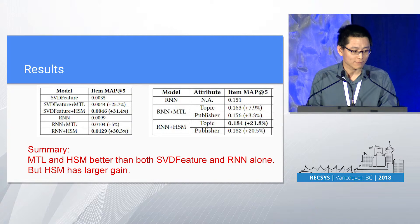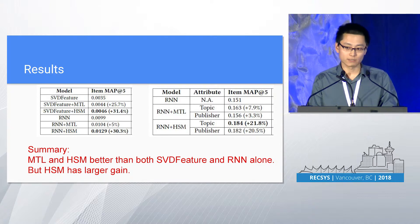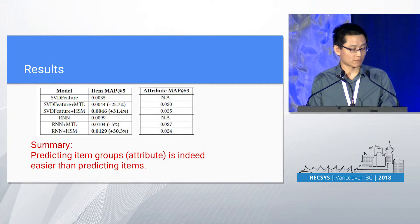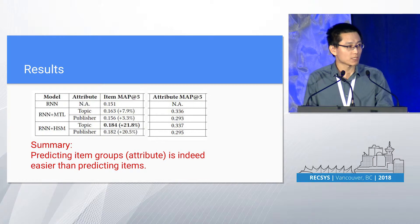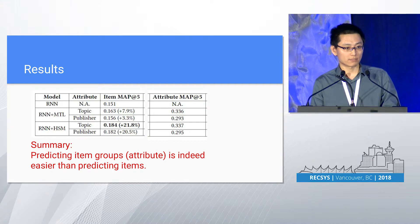Here are the results. We found that multitask learning and hierarchical softmax can improve on top of both matrix factorization and neural network — specifically SVD feature and RRM. We also observed that hierarchical softmax has a larger gain. This is a pretty big improvement compared with the baseline in terms of accuracy. Consistent with our hypothesis, we indeed observed that predicting item group attributes is easier than predicting items — attribute prediction MAP scores are much higher compared with item-level prediction.